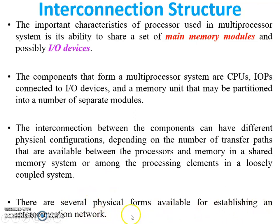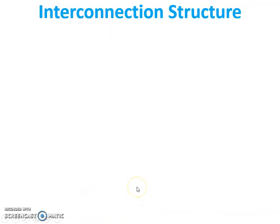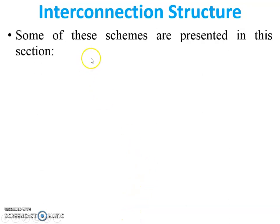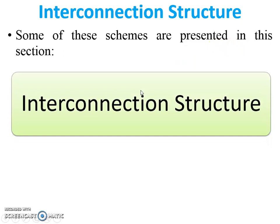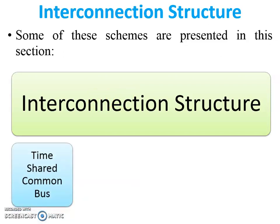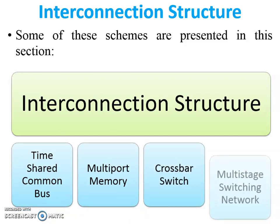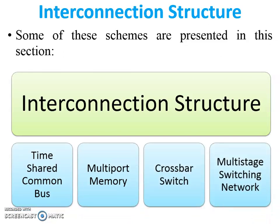There are several physical forms available for establishing interconnection networks. Interconnection structure is divided into four schemes: time-shared common bus, multi-port memory, crossbar switch, and multi-stage switching network. All scheme videos are available on my YouTube channel.